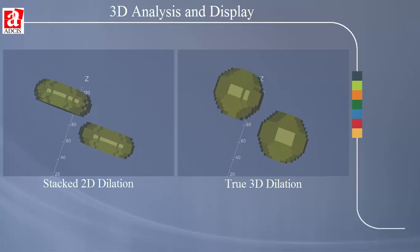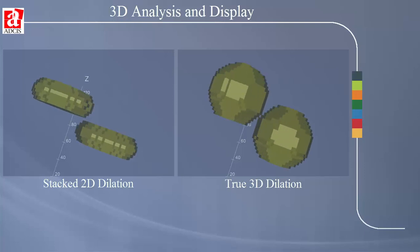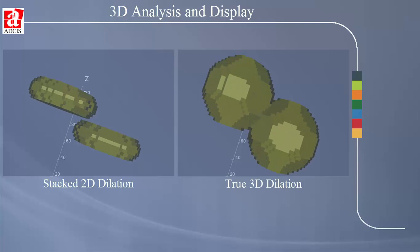While on the right, the same two spheres are dilated using true 3D processing with a sphere. Note that the two spheres will never connect using stacked processing, while using true 3D processing they do merge.